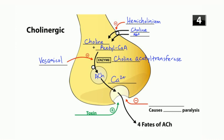There are things that can inhibit or stimulate acetylcholine release into the synapse. Black widow spider toxin stimulates release — it floods the synapse with acetylcholine, causing spastic paralysis. Botulinum toxin inhibits acetylcholine release into the synapse, resulting in flaccid paralysis because you can't contract muscles without acetylcholine stimulating the nicotinic receptors.